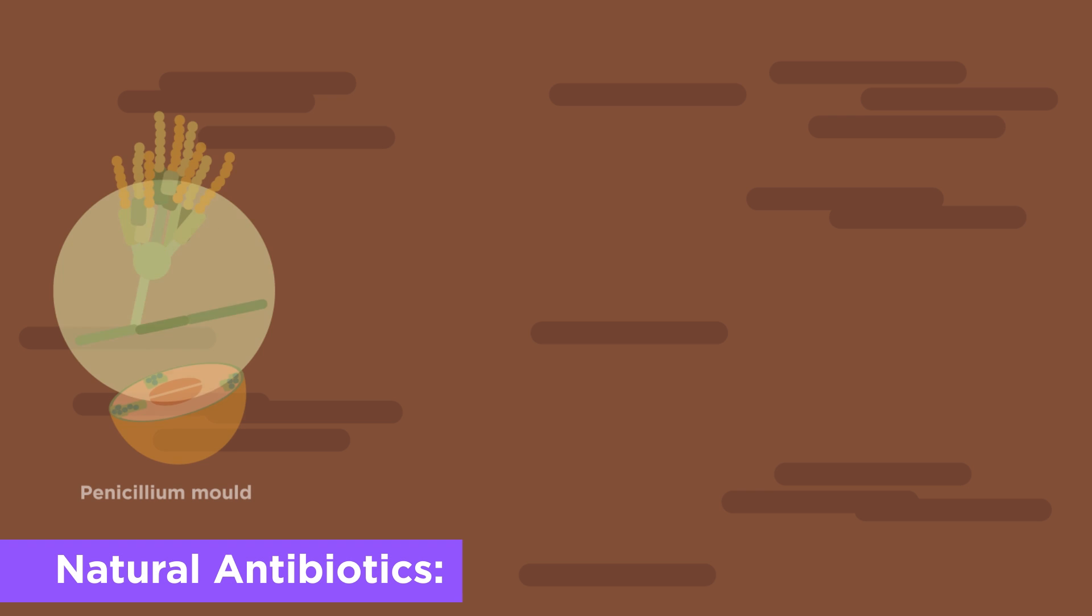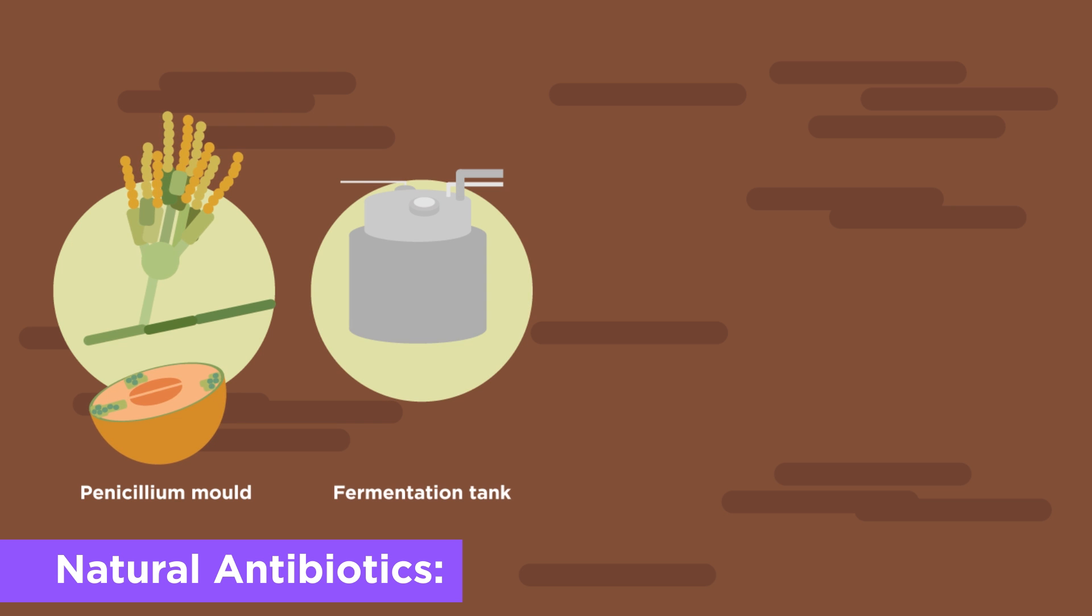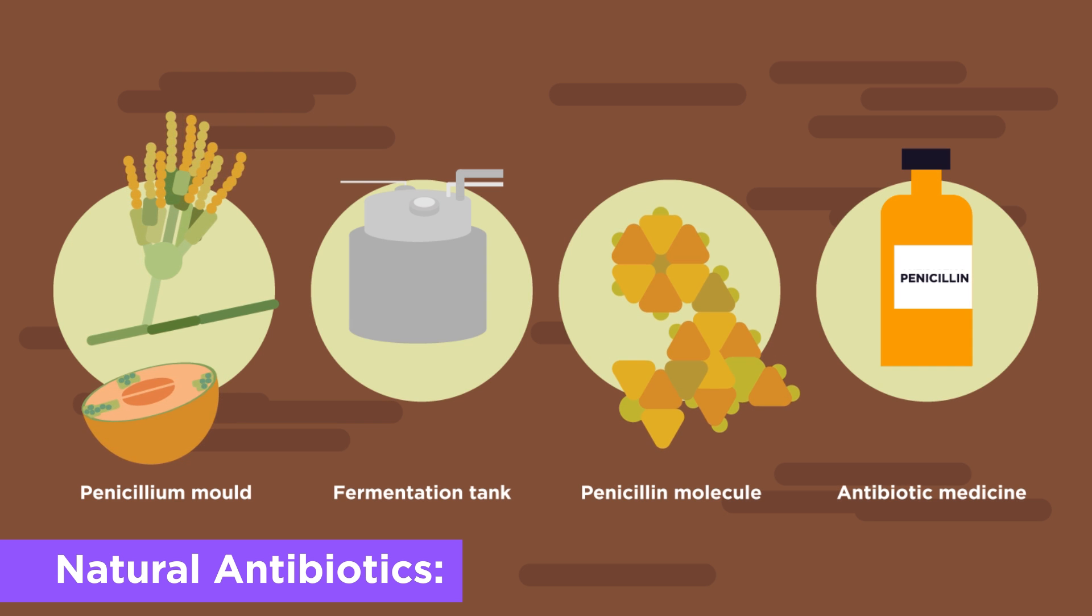Natural antibiotics are made by other organisms, such as fungi and other bacteria, like Fleming discovered. They are grown in huge colonies where the active substance is then extracted.